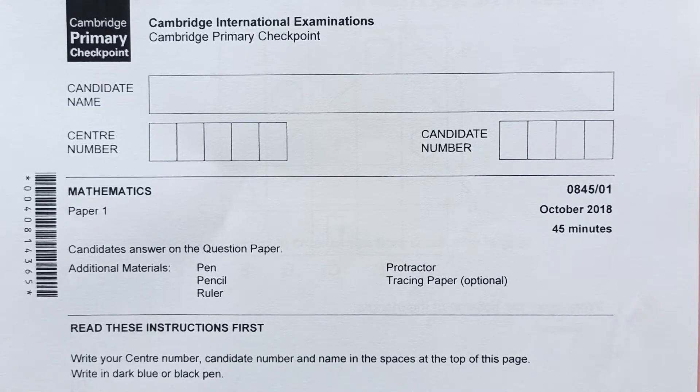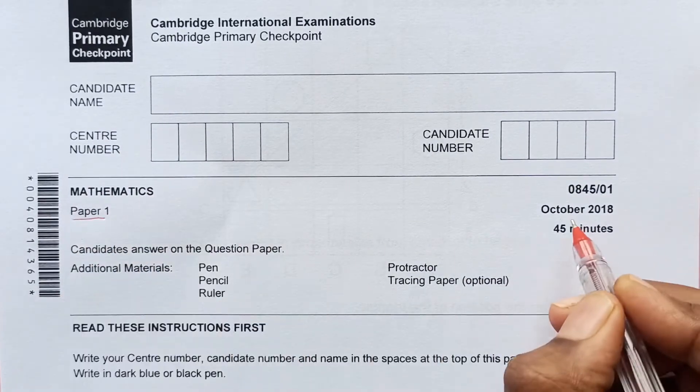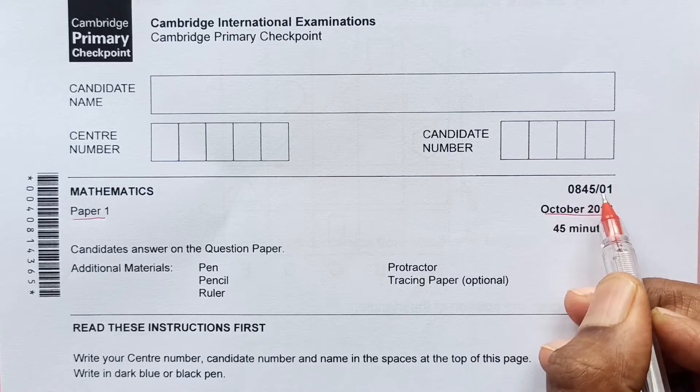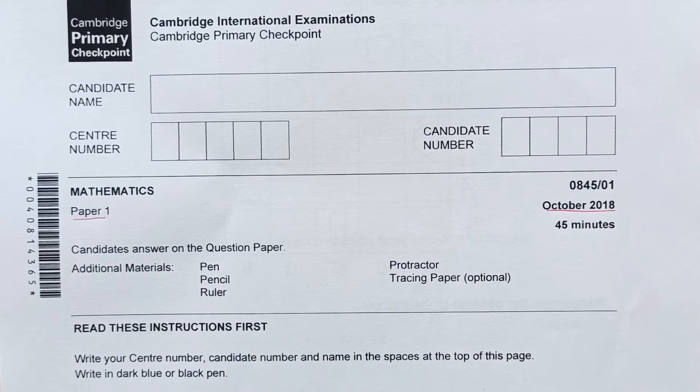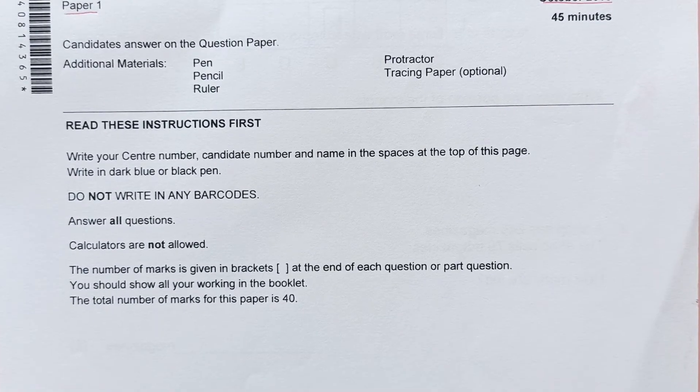Hello everyone, welcome back to my channel. Today let's go through Cambridge Primary Checkpoint Mathematics paper 1 from October 2018. The code is 0845001. Before we start, I would request you to subscribe to my channel. I've seen there are many viewers but some of you have not subscribed. Please support by subscribing as it helps motivate me to do more videos.